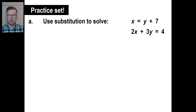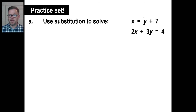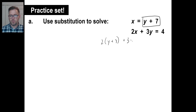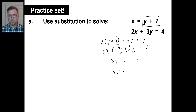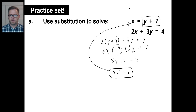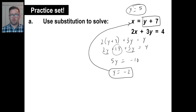We've got a couple of problems. Go ahead and pause and try problem A. If x is the same thing as y plus 7, you just put y plus 7 in the second equation. So that's 2 times y plus 7 plus 3y equals 4. Two times y and 2 times 7, giving us 2y plus 14. Then 2y and 3y give you 5y. Moving the 14 over: 4 minus 14 is negative 10. And y equals negative 2.